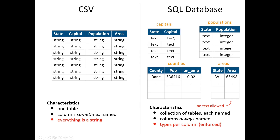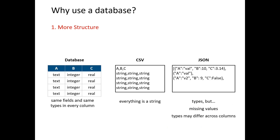In a SQL database, we can have several different types: integers, text, reals, and so on. All the data in any particular column must be the same type. We have to declare the type before we put any data in, and we can't change it or mix it up like you could with a CSV or JSON file. These types are strictly enforced. For example, the 'area of state' column is a number — we are not allowed to put text there.